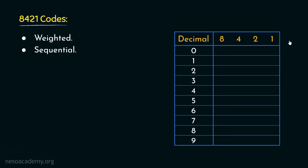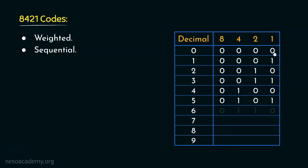If you observe closely, the 8421 place values are quite similar to the unsigned ones. So basically, for all the decimal symbols from 0 to 9, the encodings will be similar to the unsigned numbers. So 0 will be 0000, and sequentially 1 will be 0001, 2 will be 0010, and finally the symbol 9 will be encoded using the pattern 1001.